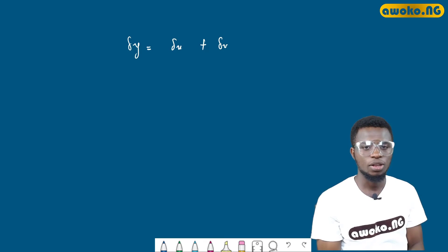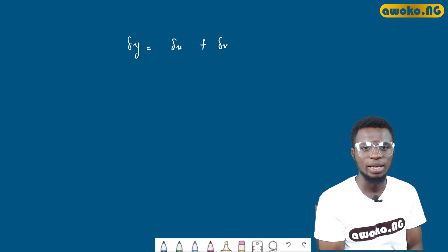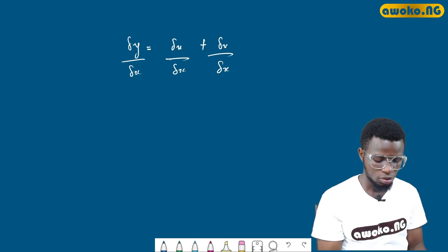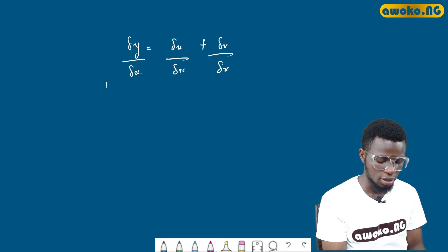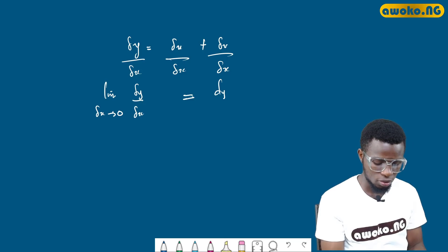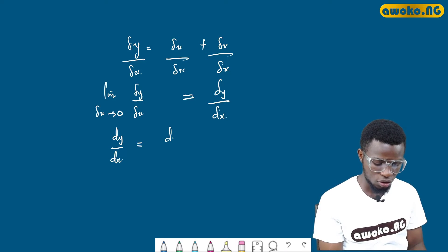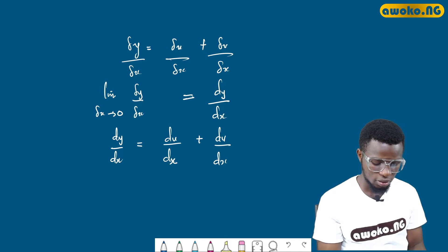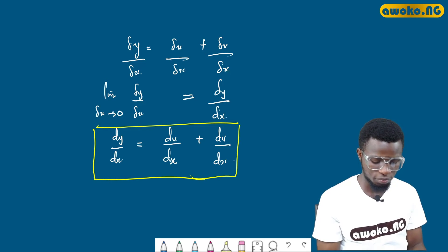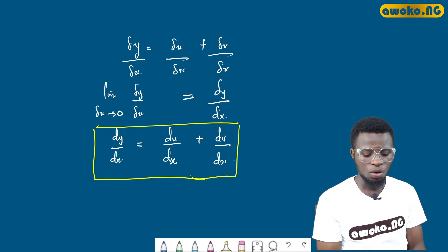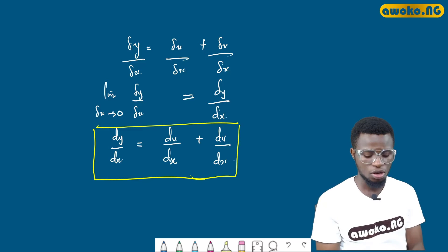Since our focus is to find dy/dx, let us divide through by Δx. Taking the limit of the left-hand side, as Δx tends to 0, gives us dy/dx. Therefore, dy/dx equals du/dx plus dv/dx. This is the differential of the addition of functions.